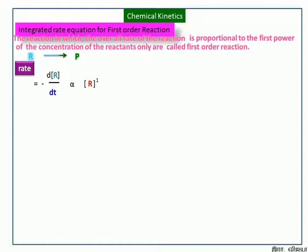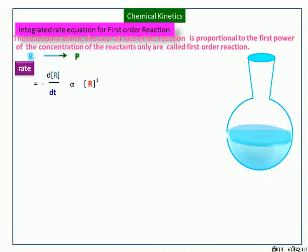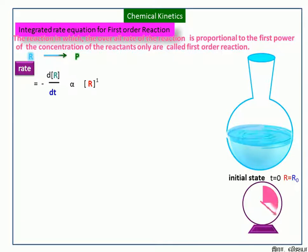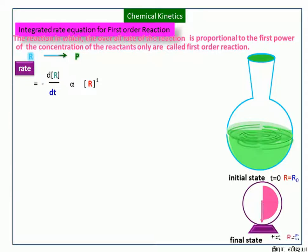Next, we see the integrated rate equation for a first-order reaction. Let us consider this round-bottom flask contains R number of reactant molecules. In the initial state, time is zero and its concentration is R₀. After a particular period of time, the reactant molecules are converted into products. We can see how the reactant molecules are changed into products by the change in color. In the final state, time is t and reactant molecule concentration is R.